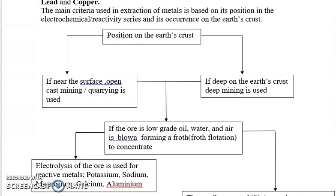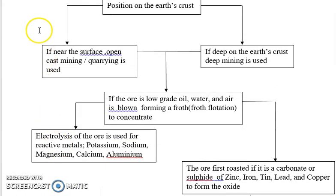For a metal to be extracted, we depend on two major things: its reactivity series and its occurrence in the earth's crust. Looking at this chart, we can see that if the metal ore is near the surface, open cast mining or quarrying is used. If the metal ore is deep in the earth's crust, then deep mining is used.